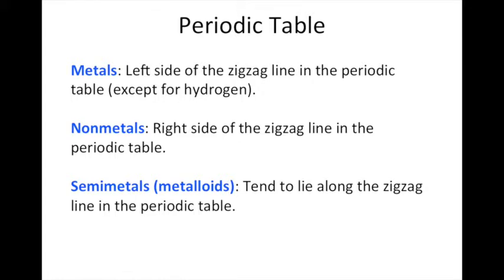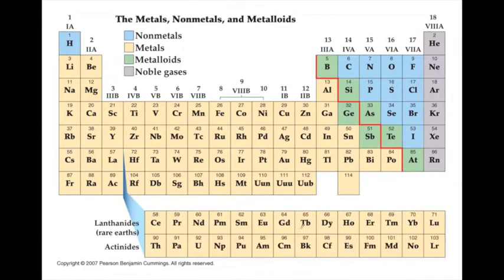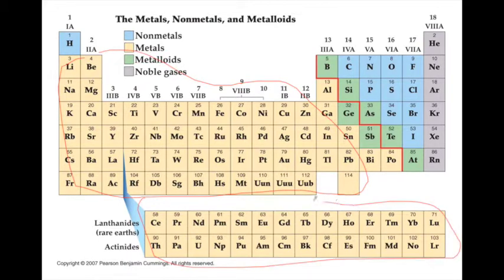The periodic table also divides the elements based on their properties. It divides them into metals, nonmetals, and semimetals, also called metalloids. The metals tend to be on the left side of the periodic table with the exception of hydrogen. The nonmetals are on the right side of the periodic table. And the semimetals lie in the boundary between the metals and the nonmetals. So here again is a different view of a periodic table. The metals are all over here, kind of in the yellowish color. And of course, the lanthanides and actinides are also all metals.